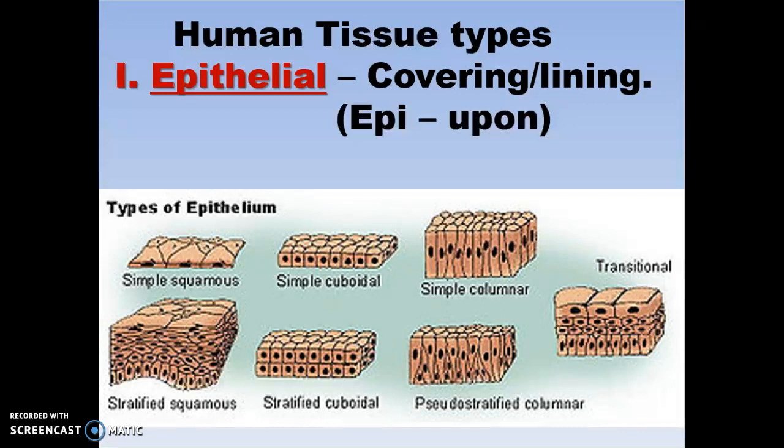Simple means one layer. Stratified means multilayered. Pseudostratified — pseudo means false. It looks like it's layered, but it's not. Usually the pseudostratified is what has the cilia for wiping down the mucus, and has goblet cells producing mucus.